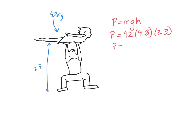So the potential energy is 946.68 joules. So what would I grade? I'd get a point for this, a point for the answer, and a point for the units.